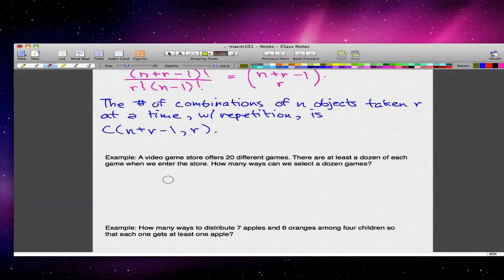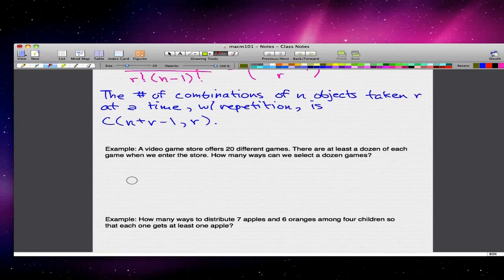Let's consider the first example, where we have a video game store that offers 20 different games. Each of these games, there are at least a dozen of each game, so there are at least 12 copies of each game when we enter the store. So how many ways can we select a dozen games? We know that there are 20 different games, so these are 20 distinct objects, so n equals 20. And each of these games have at least a dozen copies, so r equals 12.